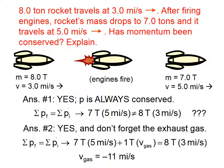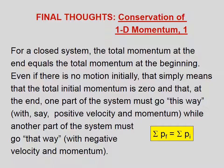And the reason is, is because it was part of the system to start with. Final thoughts on the conservation of 1D momentum: For a closed system, the total momentum at the end equals the total momentum at the beginning. Even if there is no motion initially, that simply means that the total initial momentum is 0, and that, at the end, one part of the system must go this way, with, say, positive velocity and momentum, while another part of the system must go that way, with negative velocity and momentum.